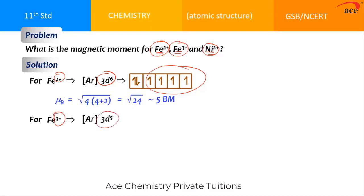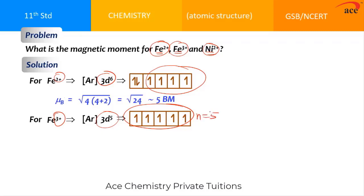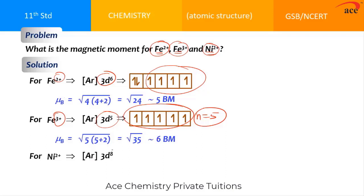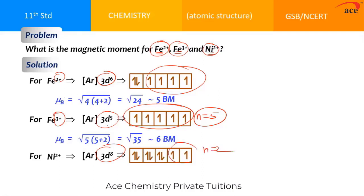For Fe³⁺, the configuration is 3d⁵. All the d orbitals are half-filled, giving 5 unpaired electrons, so n = 5. Substituting: μ = √(5 × 7) = √35, which is approximately 6 Bohr magnetons. For Ni²⁺, the configuration is 3d⁸. There are only 2 unpaired electrons, so n = 2. Substituting: μ = √(2 × 4) = √8, which gives approximately 2.83 Bohr magnetons.